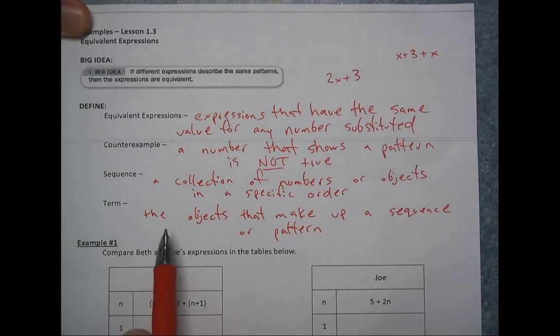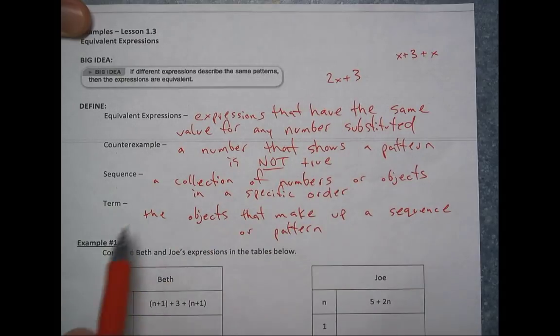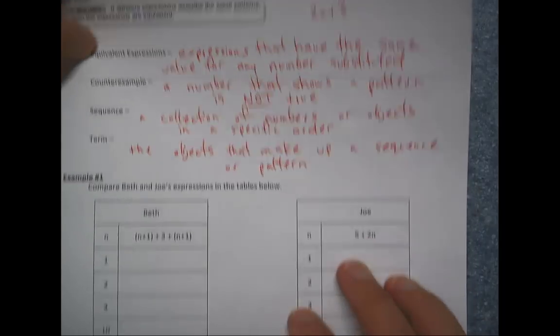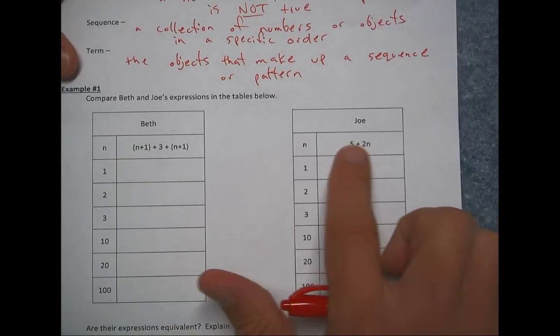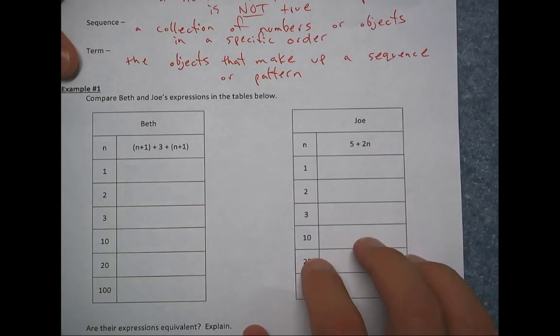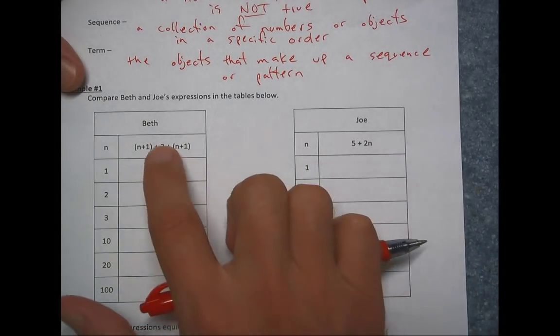And then the term, so not talking about a term in an expression, but in a sequence, it's the objects that make up a sequence or a pattern. So you're going to have term 1, term 2, term 3, it's a pattern, and we'll get more into that. So jumping down to example one. So we're going to compare both of these expressions, both with n as their variable. And we're just going to discuss, are these equivalent?